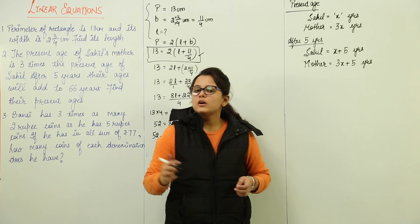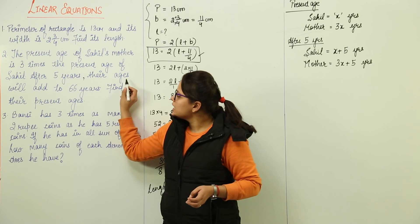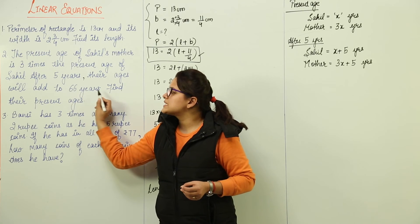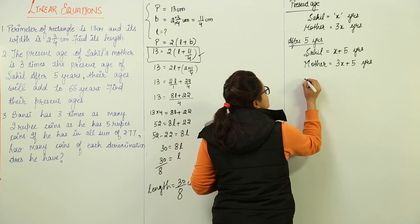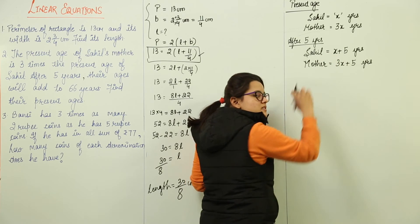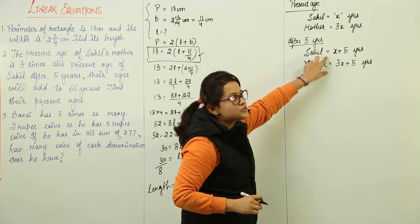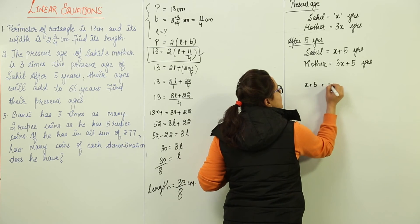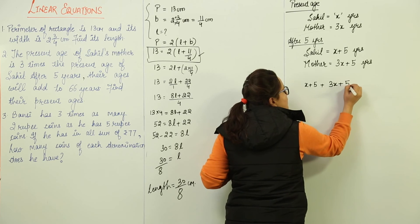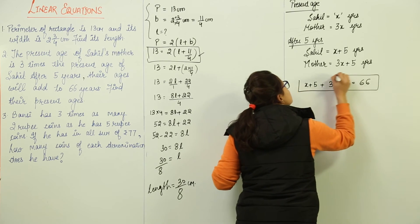Now let us continue our question. After 5 years, their ages will add to 66 years. That means the sum of their ages after 5 years, we will be taking these ages only. So we will be taking the sum of these ages together, which will add up to 66 years. Now I have found my linear equation already.